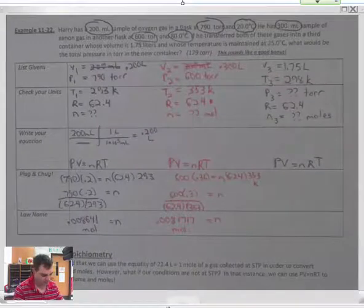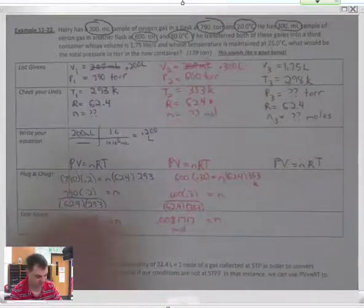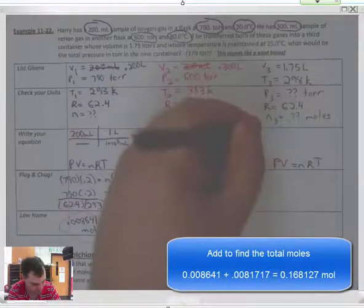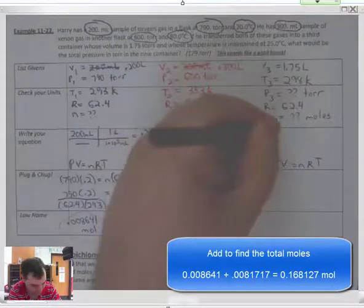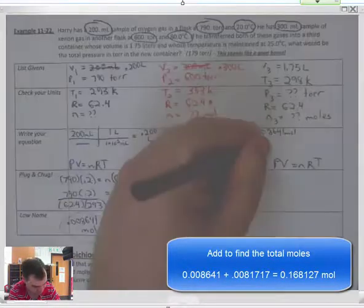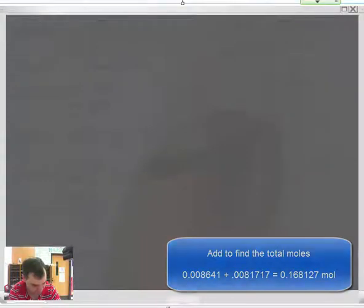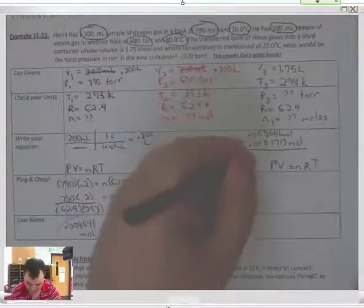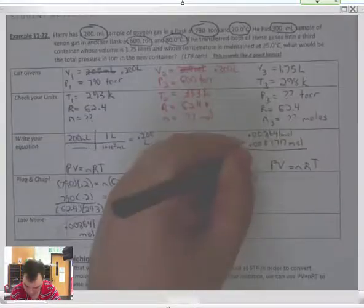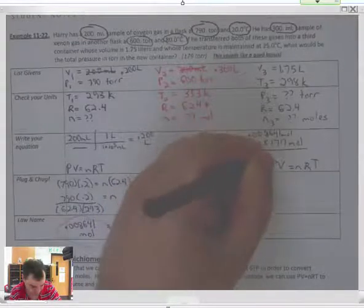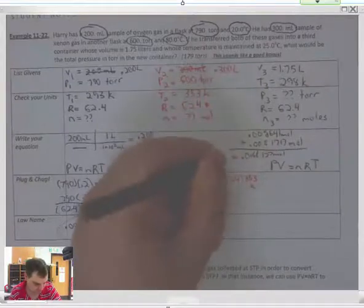I am now going to add these two together here. So, 0.008641 moles plus 0.0081717 moles equals 0.0168127 moles. That's my N for this third one here.